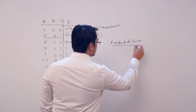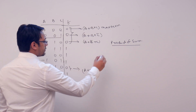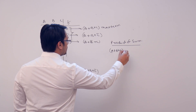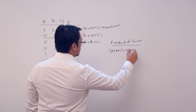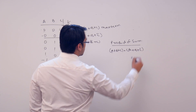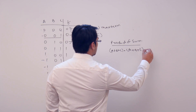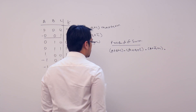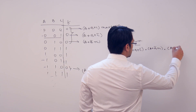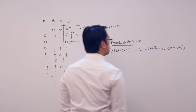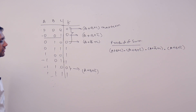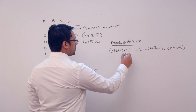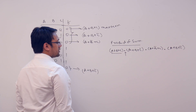Product of sum forms. So what is the product of sum? I can write it like this: (a plus b plus c) dot (a plus b plus c complement) dot (a plus b complement plus c) dot (a plus b plus c complement). This is the product of sum — we are doing product of sum expressions.